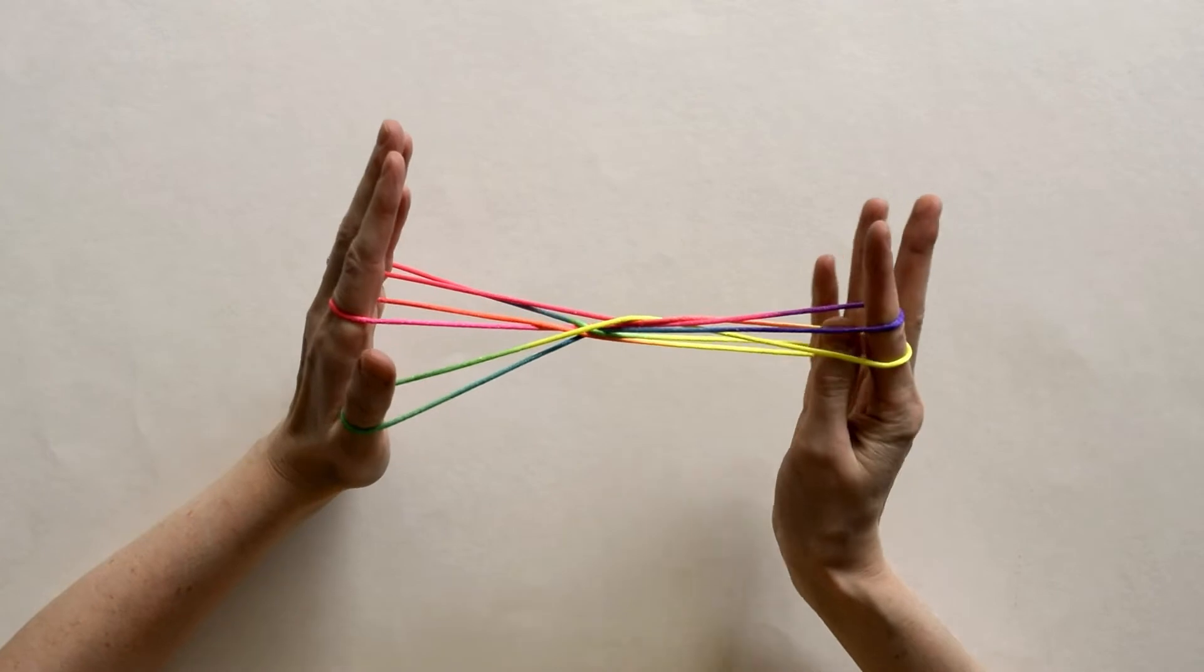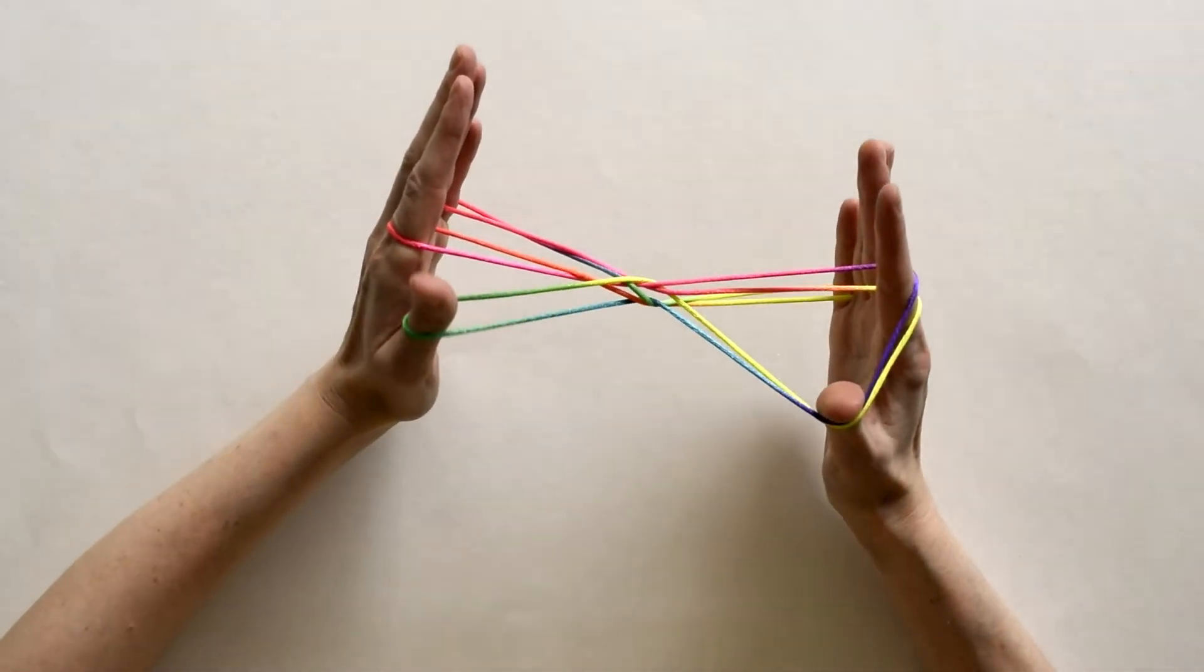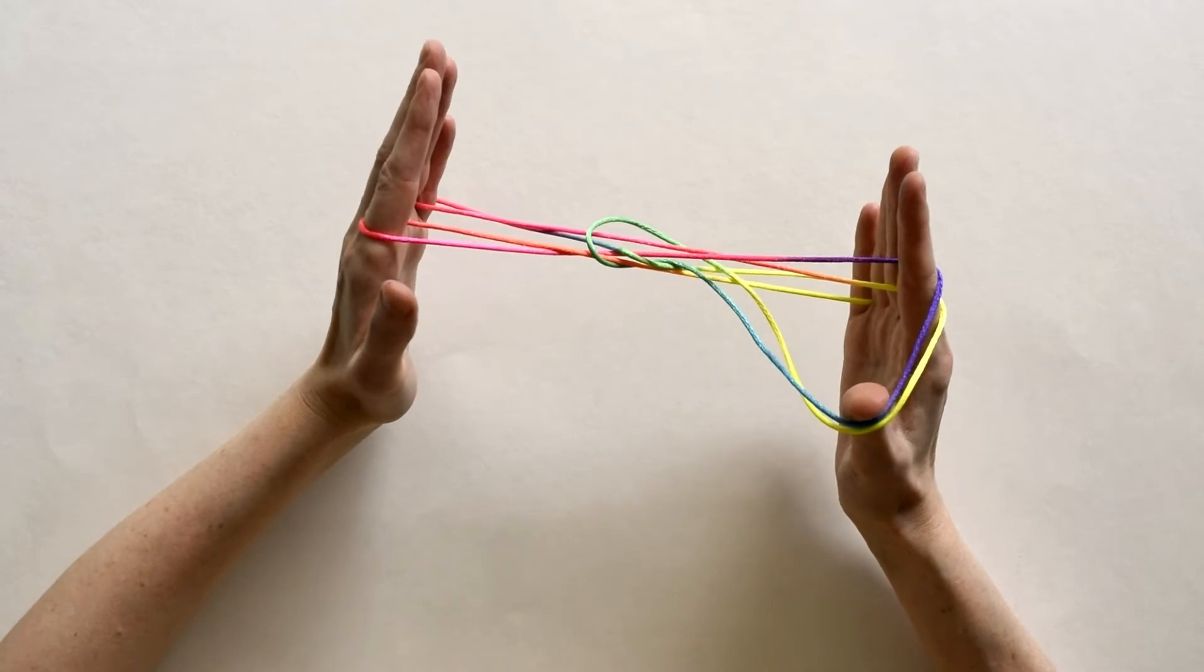Next I'll take my right thumb and go into that right index loop and open it up. Now I'll release the string on my left thumb.